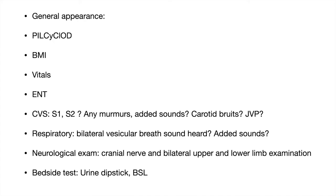Ask the examiner if you can appreciate pallor, icterus, lymphadenopathy, cyanosis, clubbing, edema, or dehydration — being selective and asking only findings relevant to your case. Then ask about the patient's BMI, followed by vitals: pulse rate and rhythm, blood pressure (including postural hypotension), respiratory rate, oxygen saturation, and temperature.